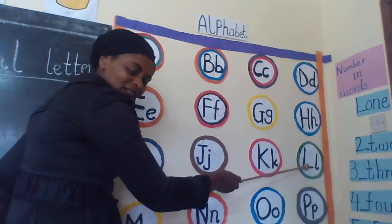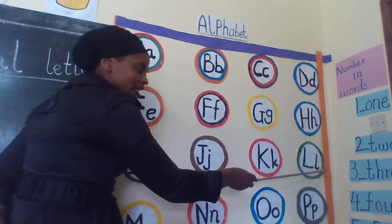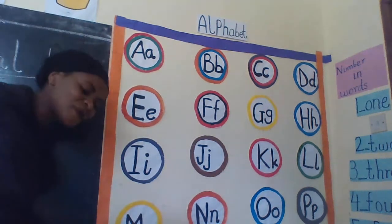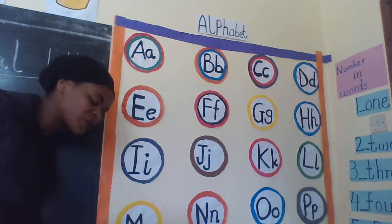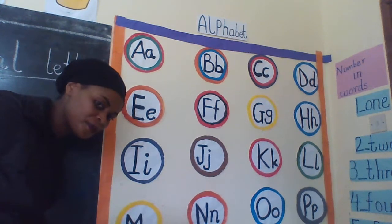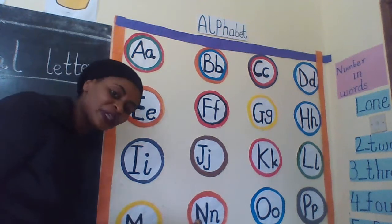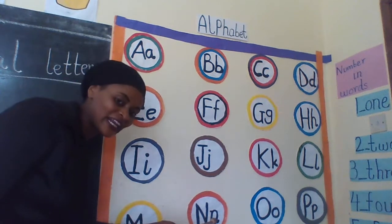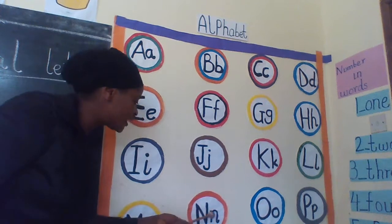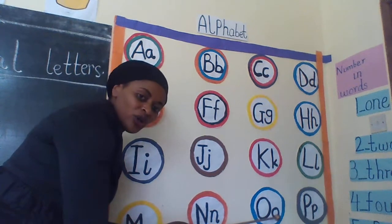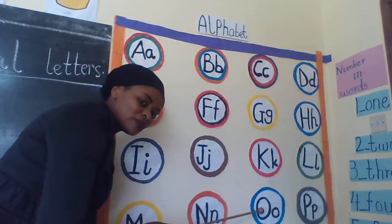Capital letter L, small letter U. Capital letter L, small letter U. Capital letter M, small letter M. Bariki, can you say after me? Capital letter M, small letter M. Capital letter O, small letter O. Capital letter O, small letter O.